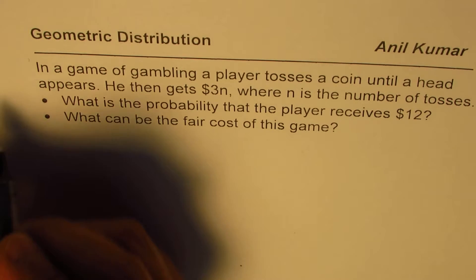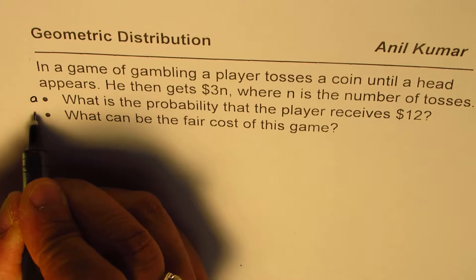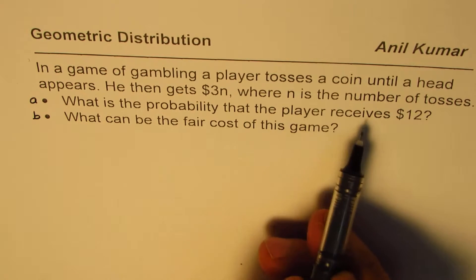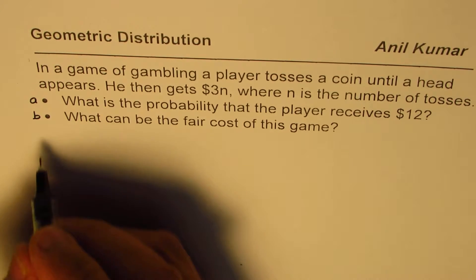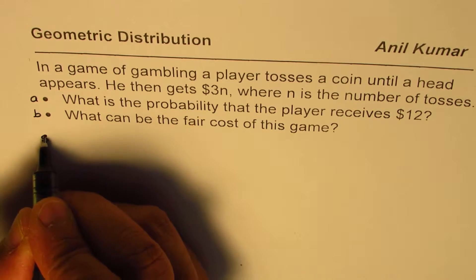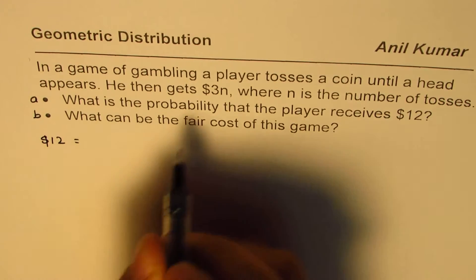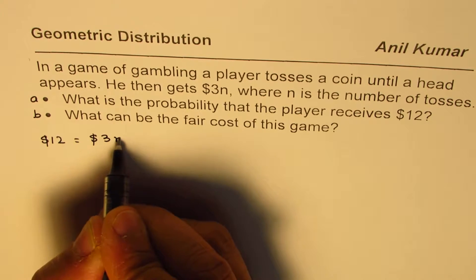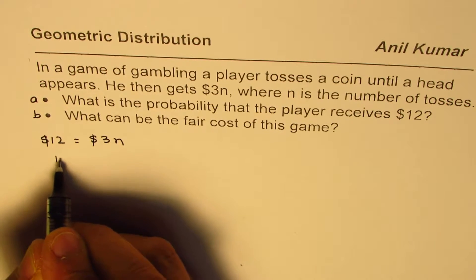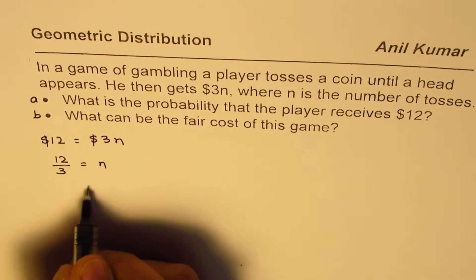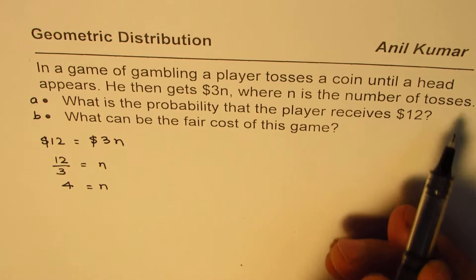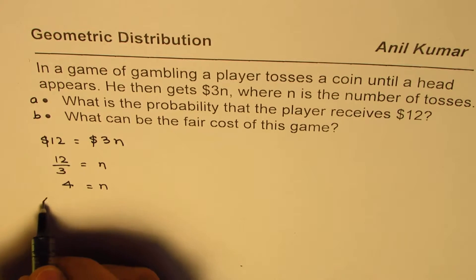These are two parts to the question. Let's do part A and then part B. What is the probability that the player receives $12? The player receives $12, which is $3 times n. So 12 divided by 3 is n, or n is equal to 4. n is the number of tosses, so there are 4 tosses.